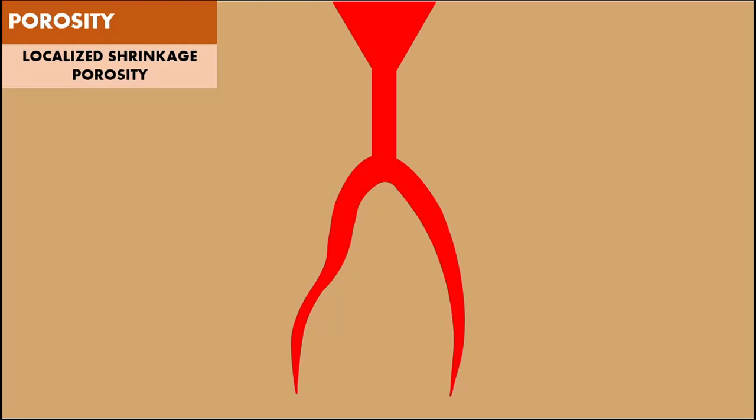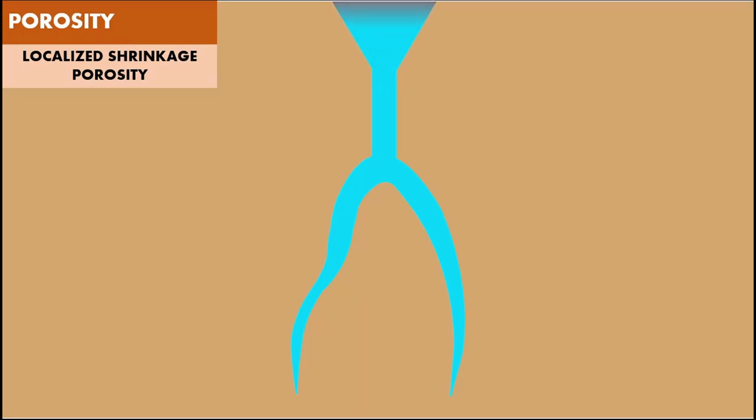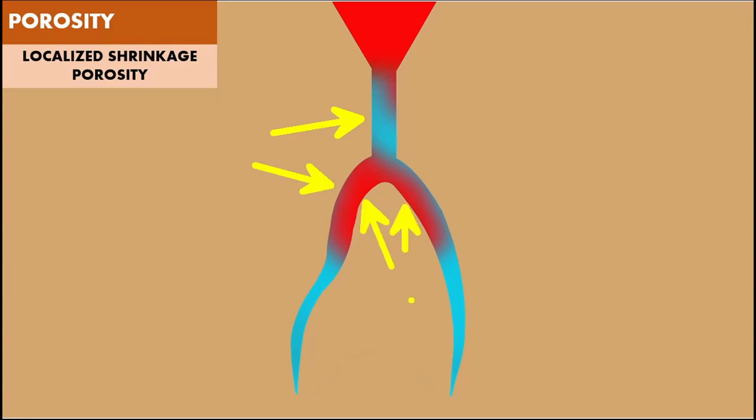Localized shrinkage is generally caused by premature termination of the flow of molten metal during solidification. The linear contraction of noble metal alloys from a liquid state to the solid state is at least 1.25%. Therefore, continual feeding of molten metal through the sprue must occur to make up for the shrinkage of metal volume during solidification. If the sprue freezes in its cross section before this flow is completed, then a localized shrinkage void will occur in the last portion of the casting that solidifies.